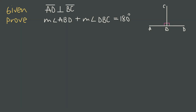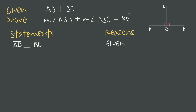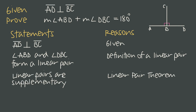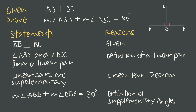For one more simple proof: if segment AD is perpendicular to segment BC, we need to prove that the sum of angle measures ABD and DBC equals 180 degrees. After stating the given, we note that angles ABD and DBC form a linear pair — by the definition of a linear pair. Then, because linear pairs are supplementary by the linear pair theorem, we conclude their measures sum to 180 degrees, by the definition of supplementary angles.